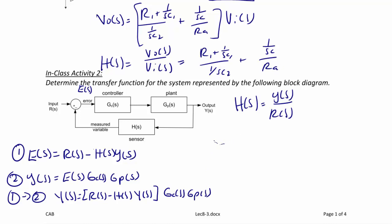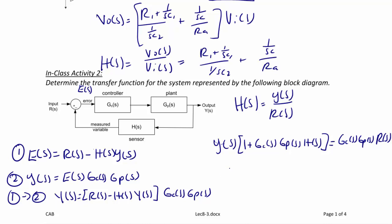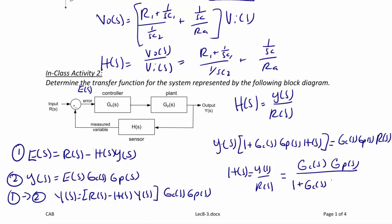Solving for Y(S), we get Y(S) times 1 plus GC(S) times GP(S) times H(S) equals GC(S) times GP(S) times R(S). And finally the transfer function H(S) equals Y(S) over R(S), which equals GC(S) times GP(S) divided by 1 plus GC(S) times GP(S) times H(S). This is the standard transfer function for a feedback control system, and we use it frequently, so I recommend that you memorize it.